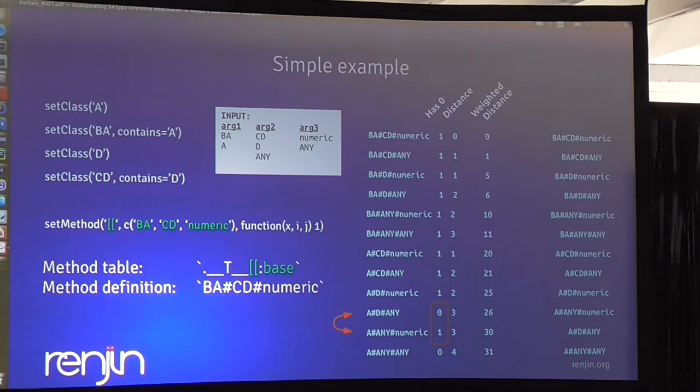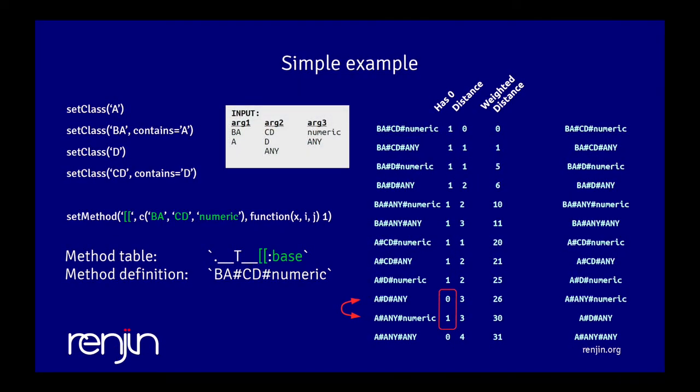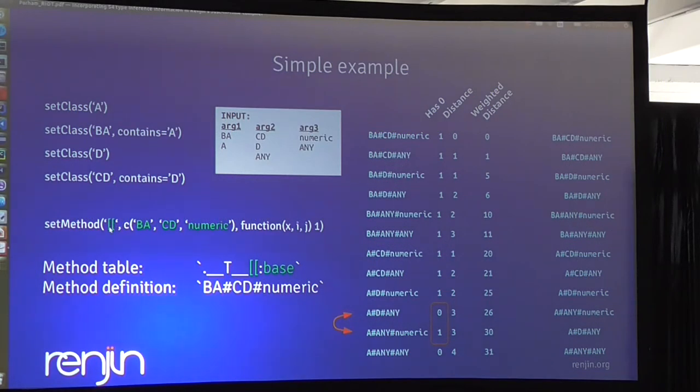Just a simple example: we have a class A, and we have class BA which inherits A. We have a class D and CD that inherits D. Then we have a subset method with setMethod which has a signature BA, CD, numeric. What you get is that this becomes the name of the method table, and this will become the method definition name inside that method table. This is based on the signature that was used to define the method.